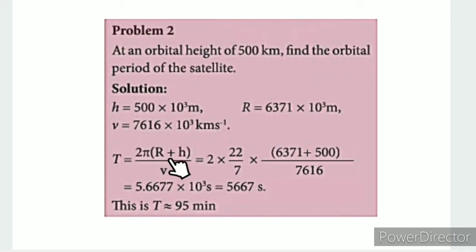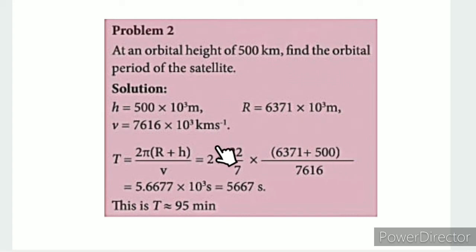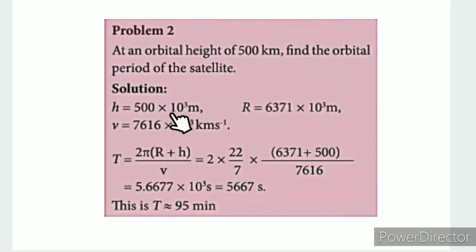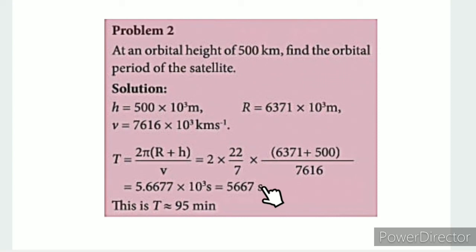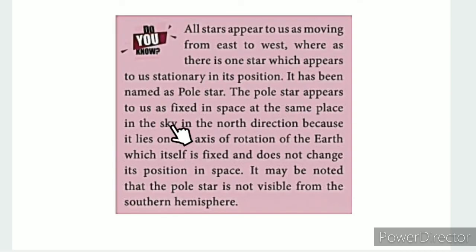The time period is T = 2π(r + h) / v. Here 2π = 22/7, r is the radius of the Earth, h is the orbital height of 500 km, and the orbital velocity value is 7,616 m/s. We add r and h, then divide. The value is of the order 10³, giving us the answer in seconds — approximately 95 minutes.